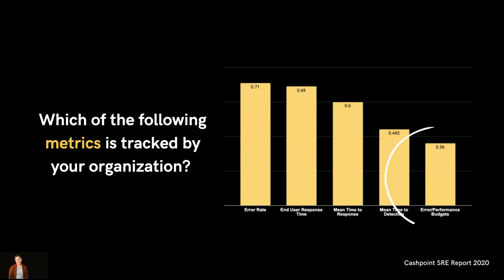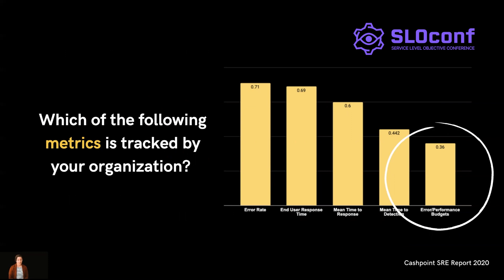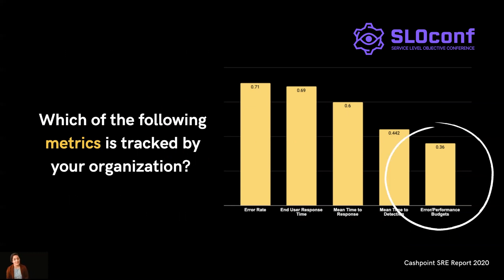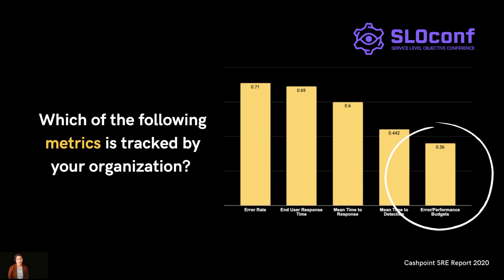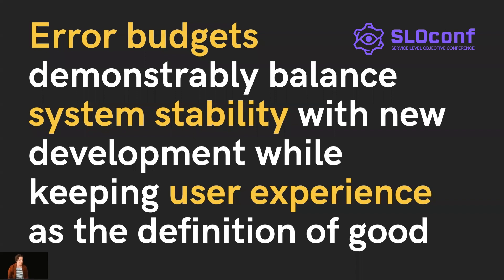I'd love to see this doubled by this time next year. You can use a telemetry tool of your choice and operational and reporting principles of your choice. But very simply, sitting down as an organization and deciding what indicators, what objectives, and what error budgets you're going to have in place — and how often you're going to update those to align to business value — is going to fundamentally change your development culture, because error budgets demonstrably balance system stability with new development while keeping user experience as the definition of good.